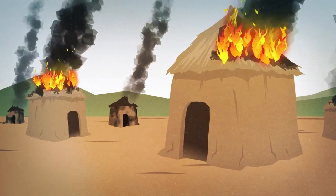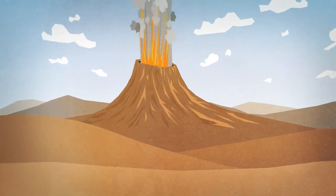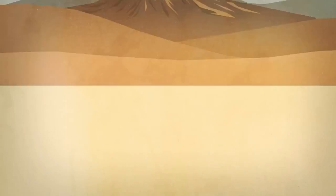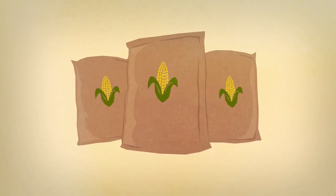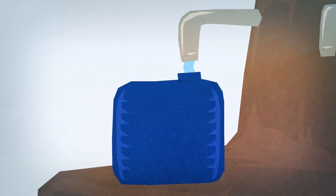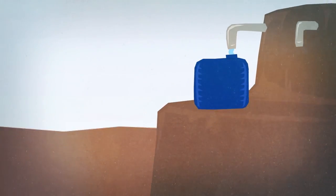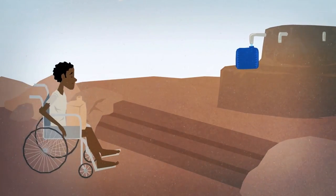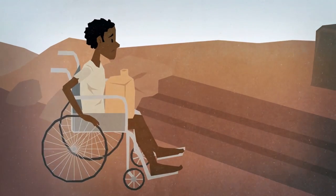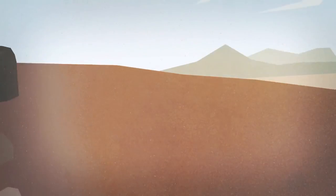People affected by conflict or natural disasters are vulnerable to threats to their lives, safety and dignity. When agencies provide humanitarian assistance such as food, shelter, water, sanitation and hygiene services, they need to identify risks for the affected population in terms of safety, dignity and meaningful access related to the provision of humanitarian assistance.